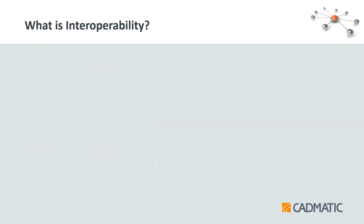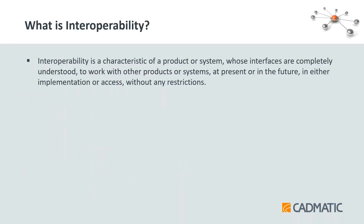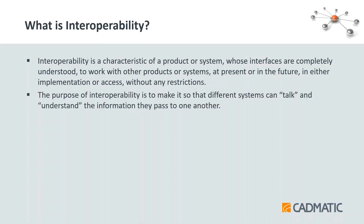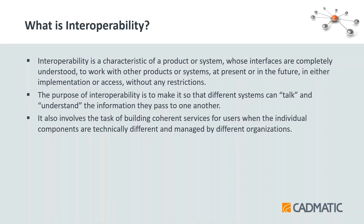So first, the basic general concept: what is interoperability? It is a characteristic where two bodies or systems whose interfaces are completely understood can work with other products or systems at the current stage or in the future, without any restriction, with access and good implementation. The purpose of this concept is to make it possible for systems to talk and understand each other's information. It involves the task of building coherent services for users when individuals are technically at different locations, systems, or departments.